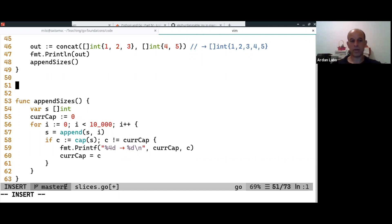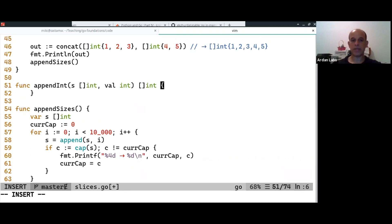So I'm going to just do an integer append. So I'm getting a slice of integer, and I'm getting a value which is an integer, and I'm returning a slice of integers. And this is roughly what the built-in append is doing.